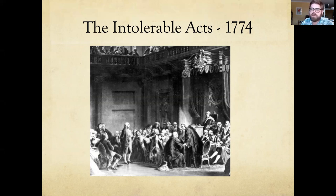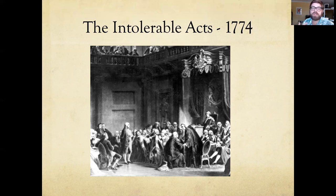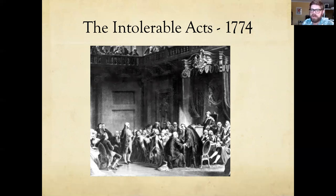People in Massachusetts and many other colonies say Britain has overstepped completely. Members of different colonies start coming together in what are called Continental Congresses to express their displeasure. Within a year, by 1775, shots have been fired between American forces calling themselves patriots and the British Royal Army in Massachusetts — at places called Lexington and Concord — which some consider the first shots of the American Revolution.